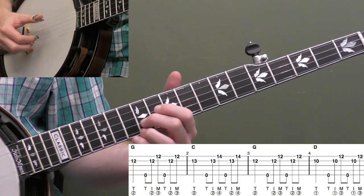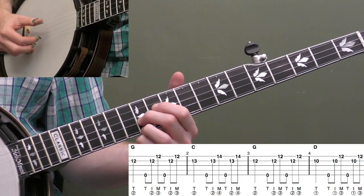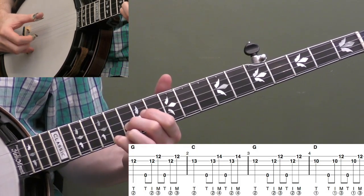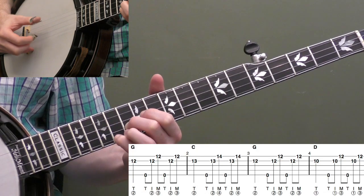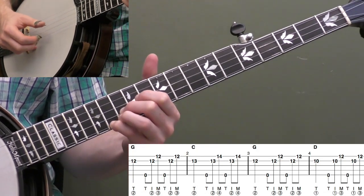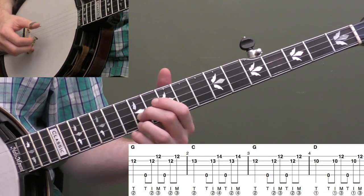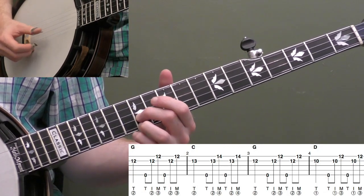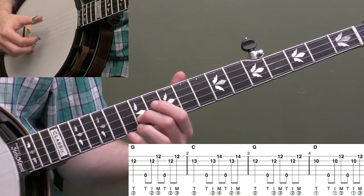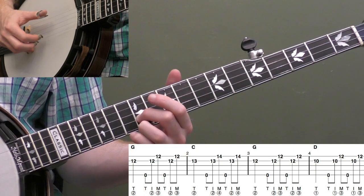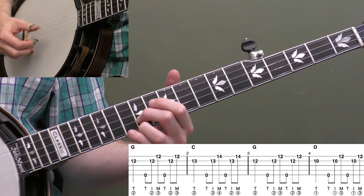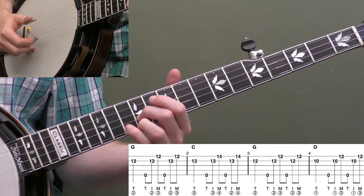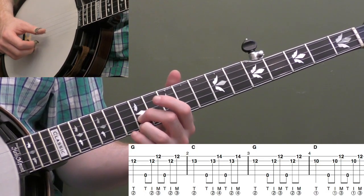What I also want you to practice though is try starting with your index finger. That'd be one you'd want to be able to play both ways because depending on what you're doing on the measure right before that, a lot of times you're going to want to start it with your thumb, but there's also instances where you might want to start that measure with your index finger of your right hand. Make sure you're playing the timing the same: one, two and, three and, four and. There's still a pause on beat one.